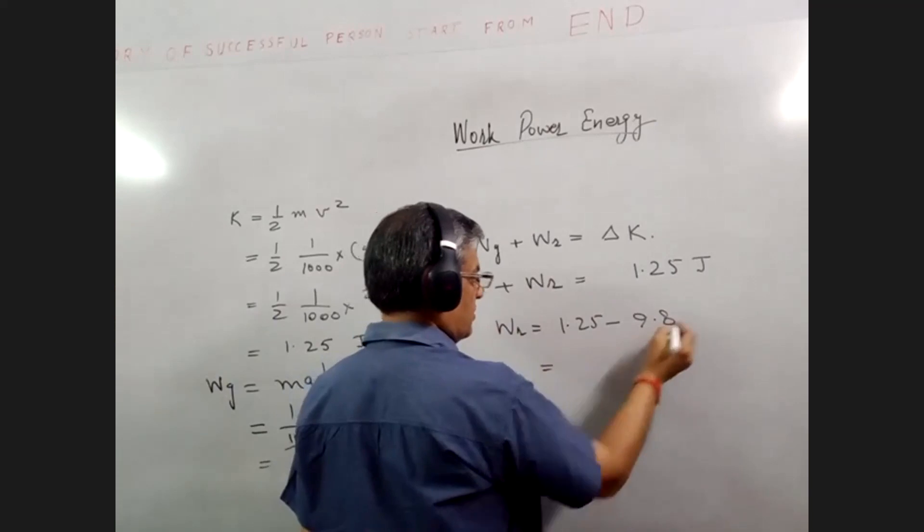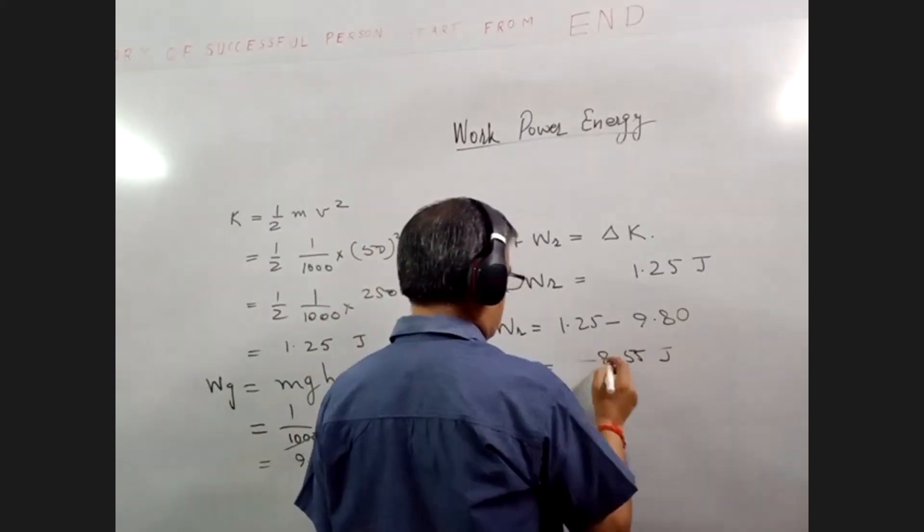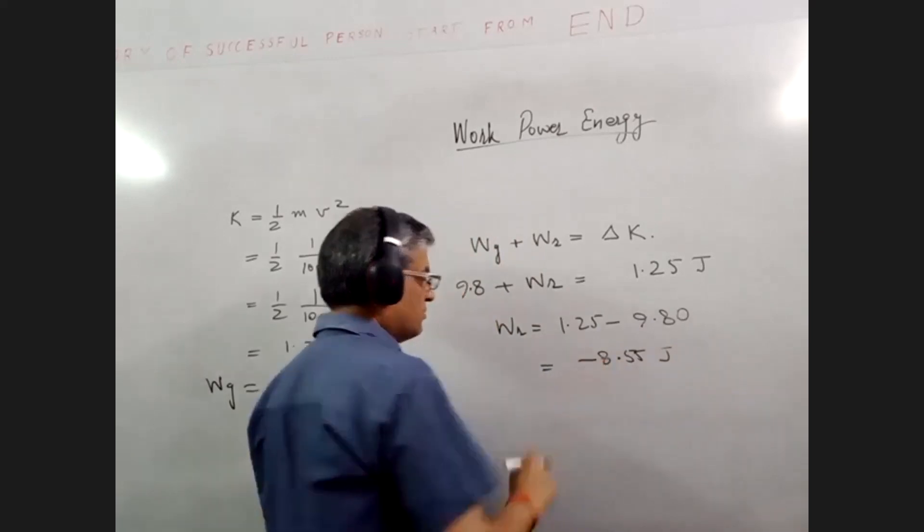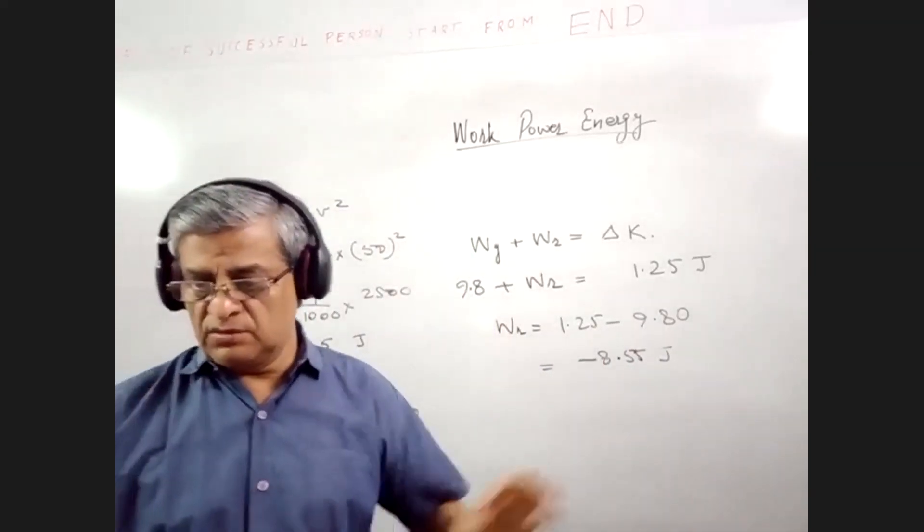So how much is this? Simplify this: minus 8.55 joules of work is done by the resistive force. So is this example clear?